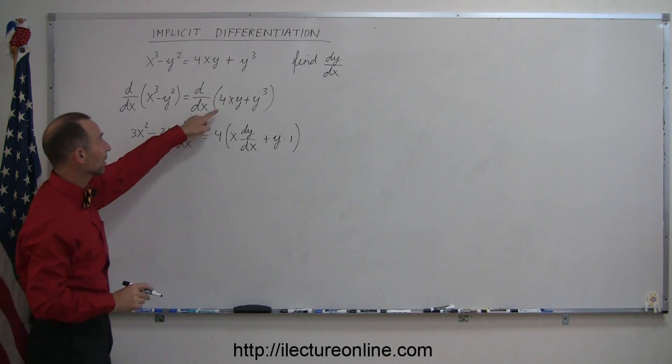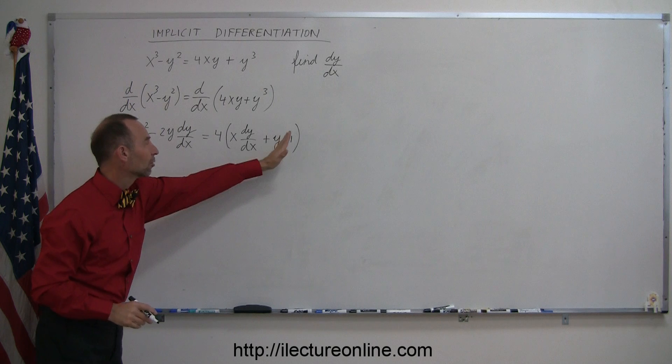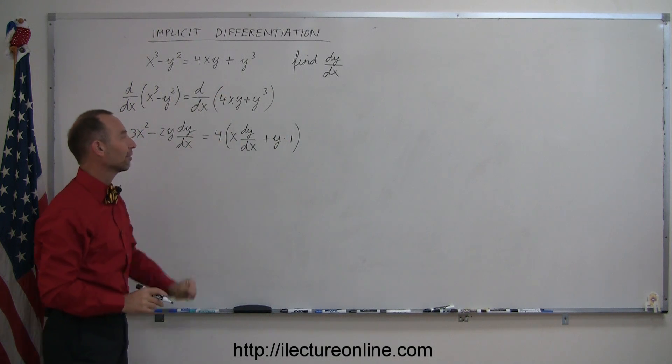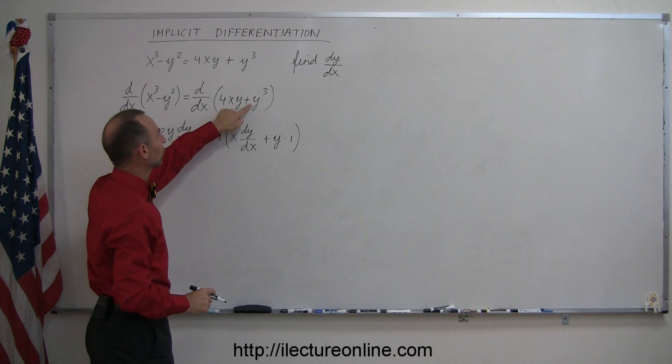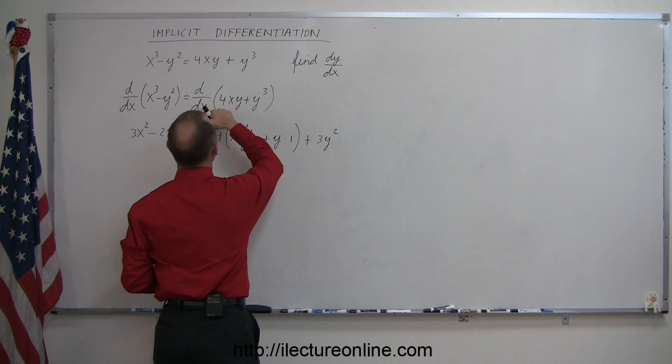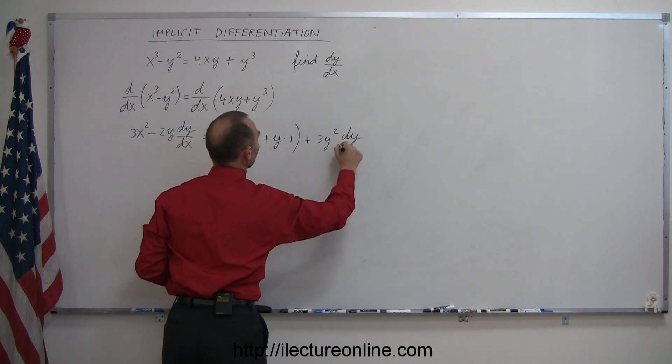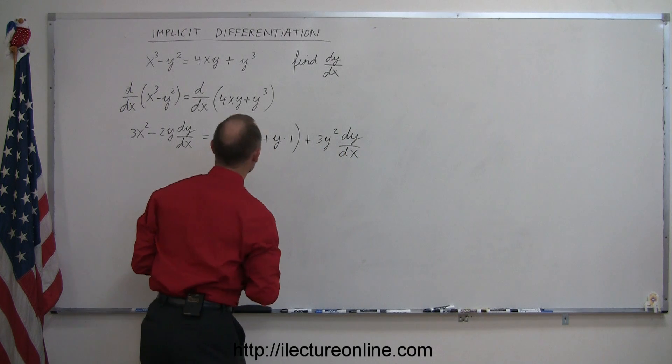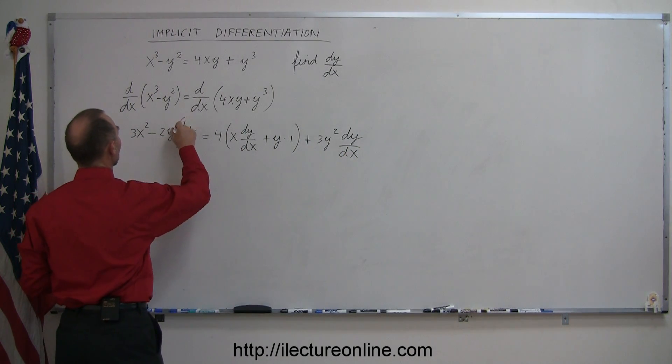Now we still have to take the d/dx of y³, so that is plus 3y² times the derivative of y with respect to x, which is dy/dx. And now notice that we have 3 places where we find dy/dx.